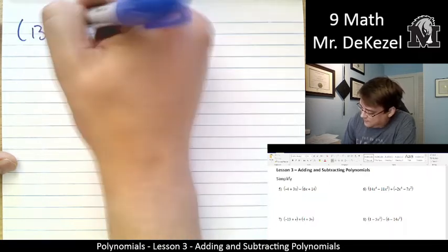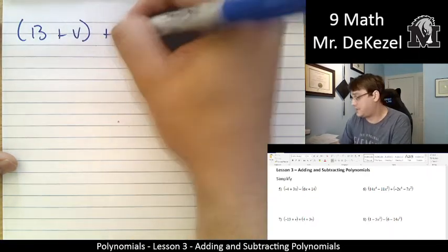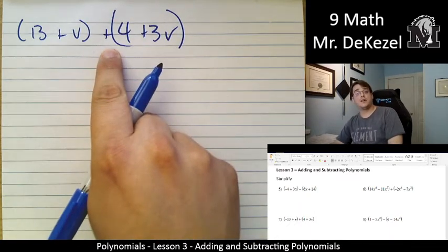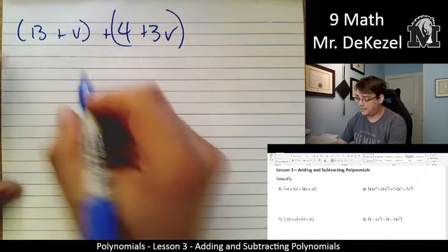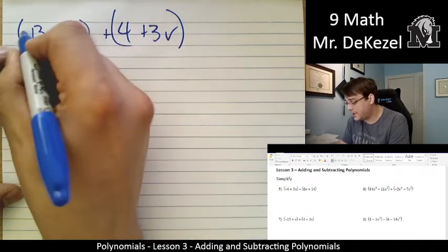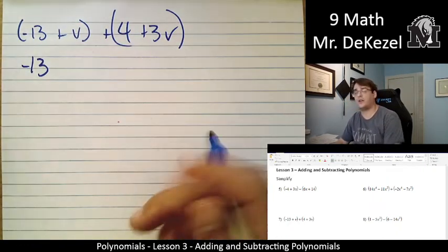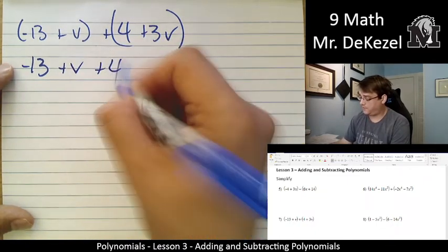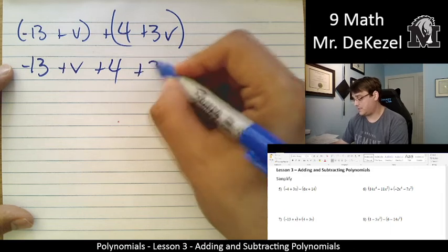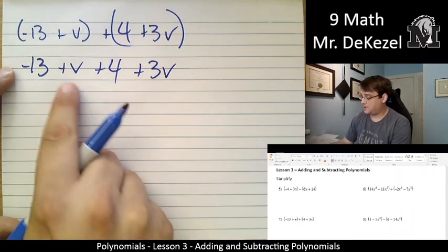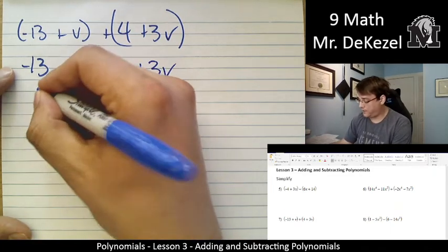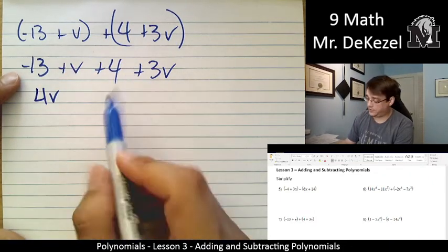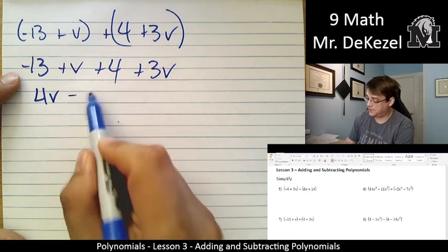Minus 13 plus v, plus 4 plus 3v. This is also in brackets. We have a plus sign, so we leave the second part the same. I'm sorry, this should be negative 13. Minus 13 plus v plus 4 plus 3v. Our v's are going to add together. That's 4v. And then our other numbers add together. That's minus 13 plus 4 equals minus 9.